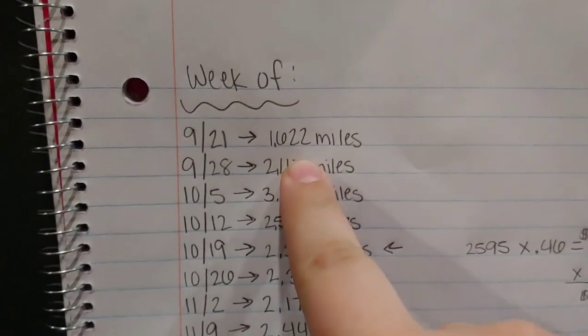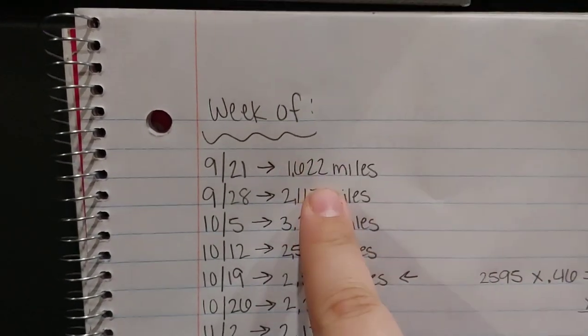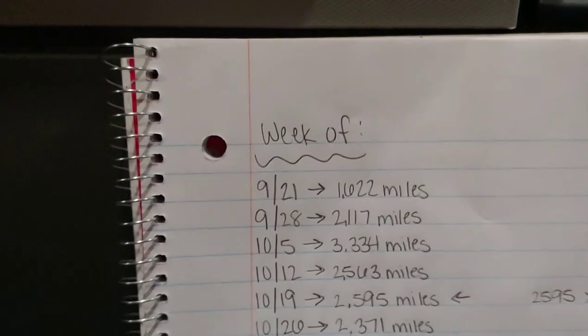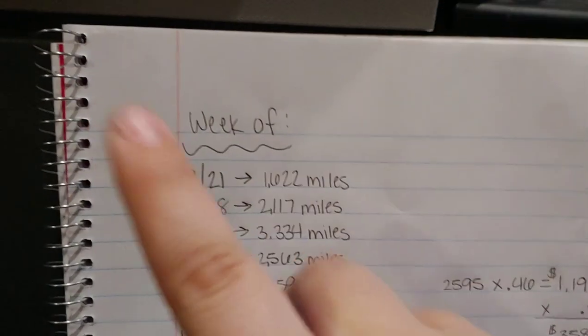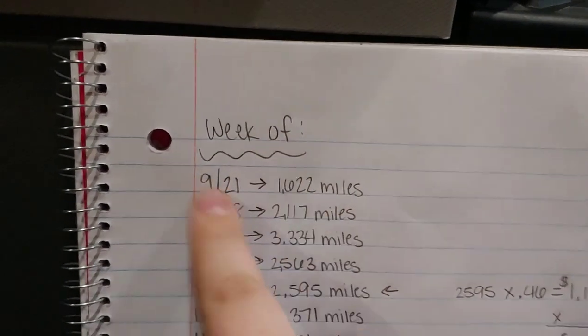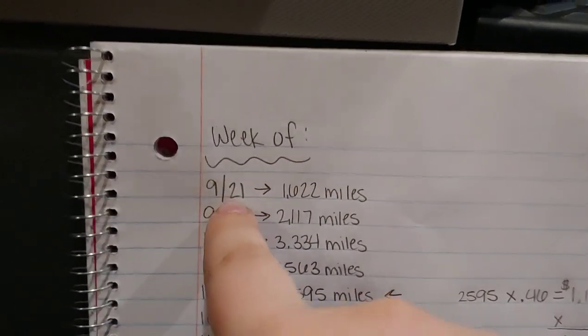And this will work for anybody, as long as you know how much you'll be getting paid, this will work for you. This is the week that we came home, 1,600 miles. It's usually not that low whenever we come home. Usually it's right at 2,000, maybe a little bit less. But that was what we got for week of 9/21. That was the check.